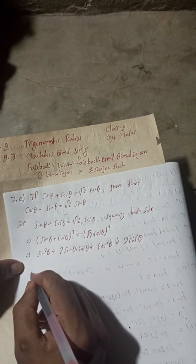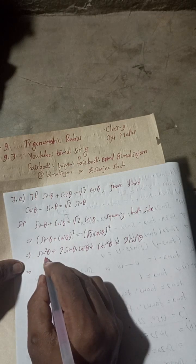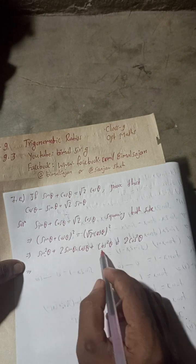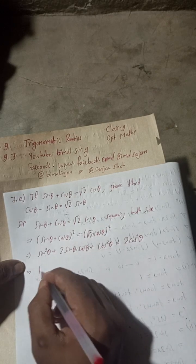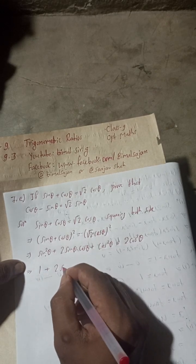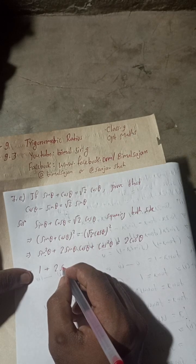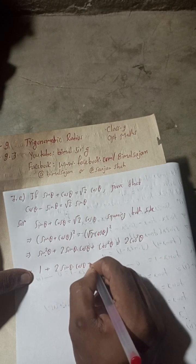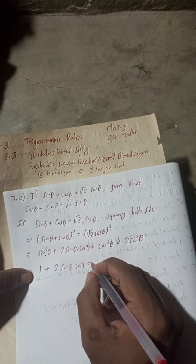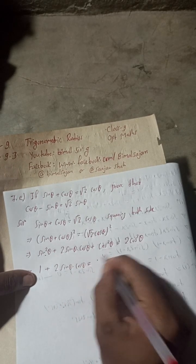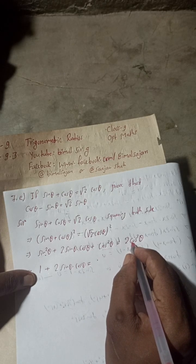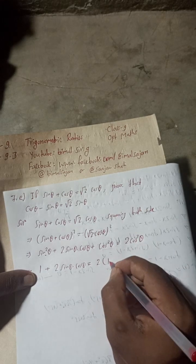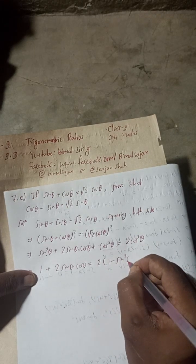Now here, sin²θ + cos²θ = 1. So the left side becomes 1 + 2 sin θ cos θ. On the right side, 2cos²θ can be written as 2(1 − sin²θ), using the Pythagorean identity.